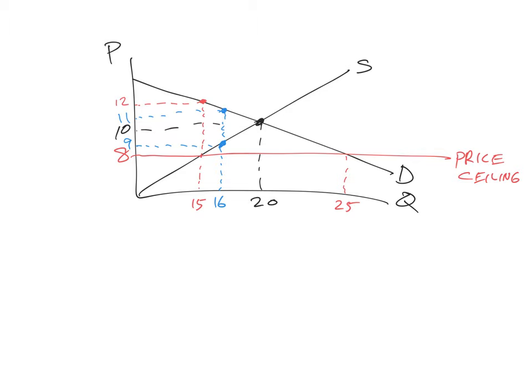Since we're able to make people better off without making anyone worse off by producing that 16th Twinkie, a production level of 15 is not Pareto efficient. There's consumer surplus and producer surplus available that won't happen because of the $8 price control. It prevents the 16th, 17th, 18th, and 19th units from taking place. It's not until we get to 20 units that we're Pareto efficient. At 20 units, the only way to make anyone better off is to make someone else worse off.